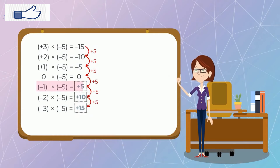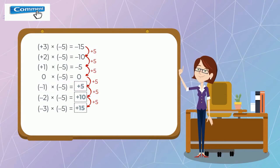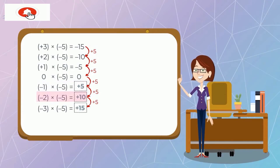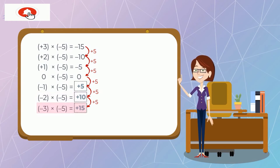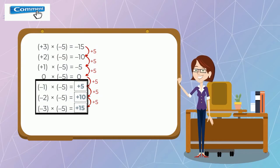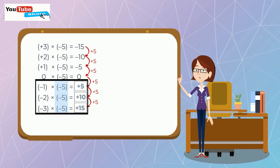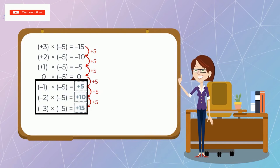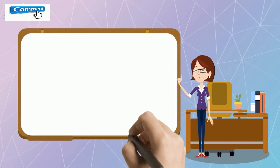Así que menos 1 por menos 5 es igual a más 5. De nuevo, si observamos las últimas 3 multiplicaciones, se trata del producto de un número negativo por un número negativo, donde el producto es un número positivo.